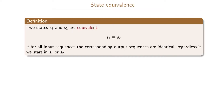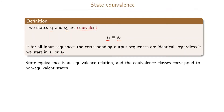We now have the following definition for state equivalence. Two states S1 and S2 are equivalent — written S1 ≡ S2 — if for all input sequences the corresponding output sequences are identical regardless of whether we start in state S1 or S2. State equivalence is an equivalence relation and the equivalence classes correspond to non-equivalent states.